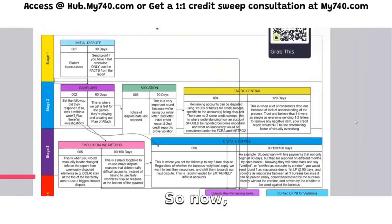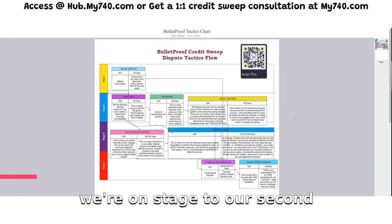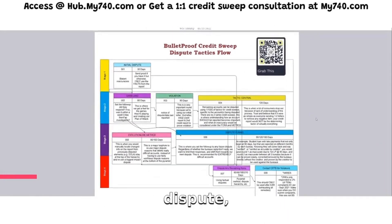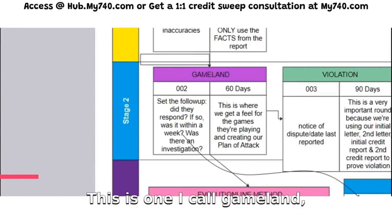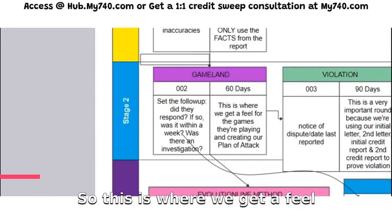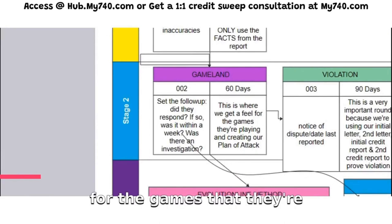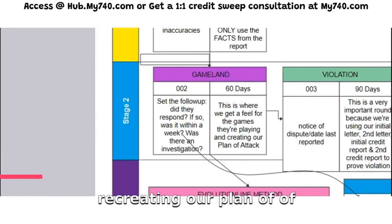So now 30 days later, we're on stage two — our second dispute. This is where we're going to set the follow-up. This is what I call 'Gameland' — this is where we get a feel for the games the credit bureaus are playing and we're creating our plan of attack.